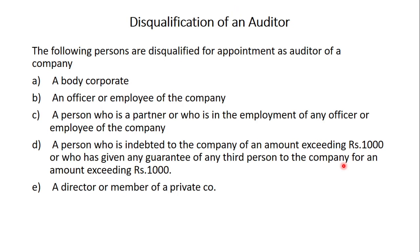Now, the disqualifications of an auditor. Sometimes a person may be appointed as auditor but he may be disqualified. The following persons are disqualified for appointment as an auditor of a company. First: a body corporate. A joint stock company or a body corporate cannot be appointed as an auditor of a company.